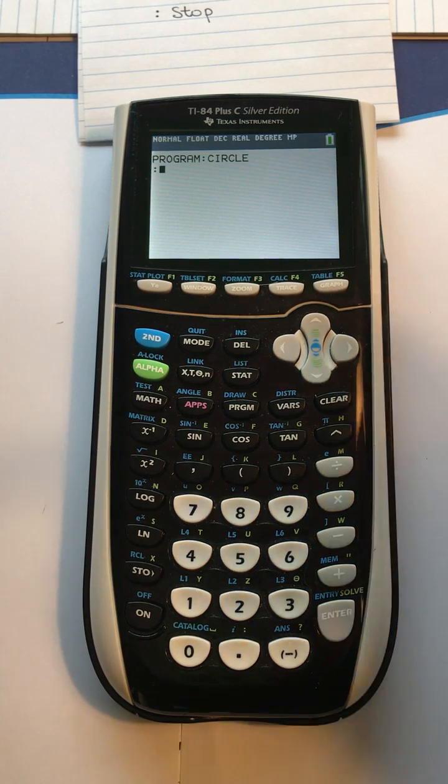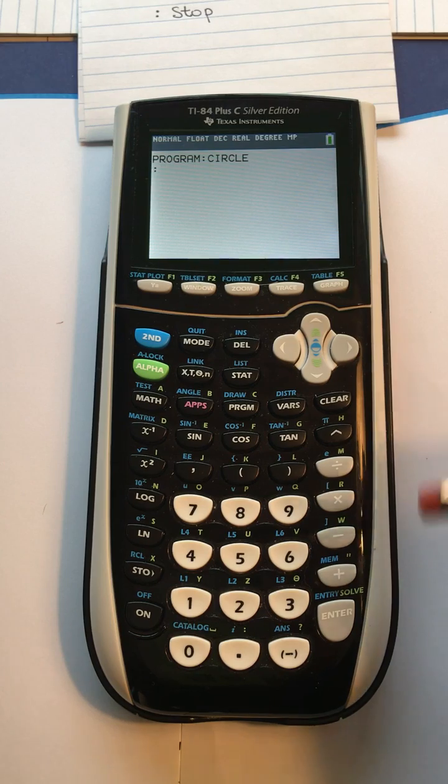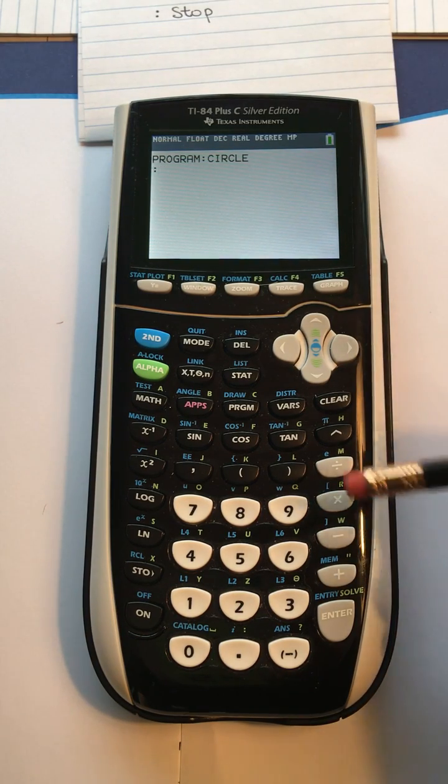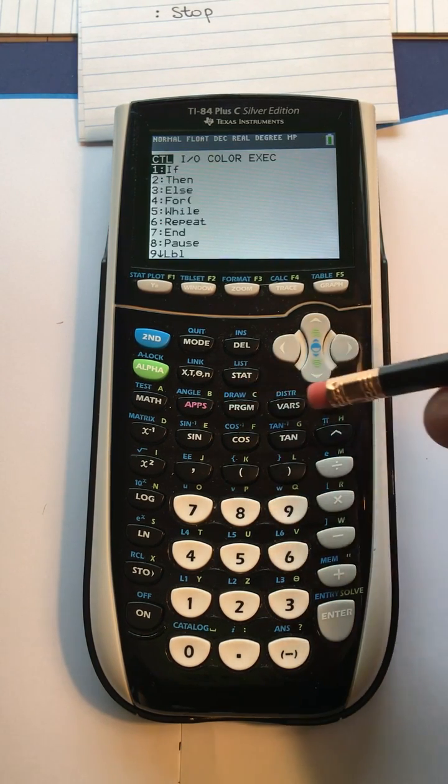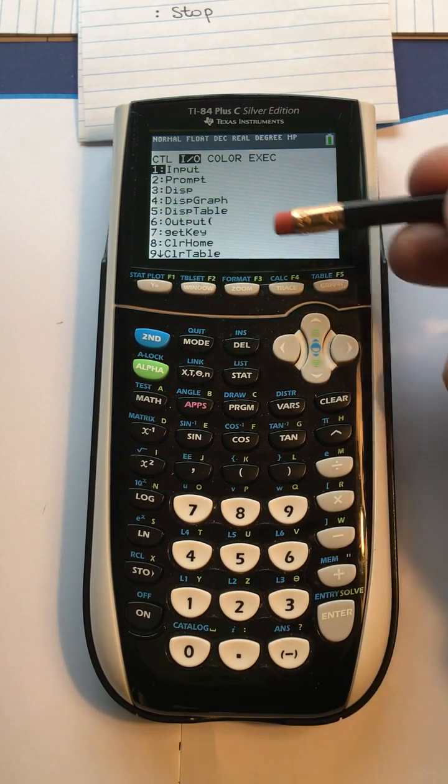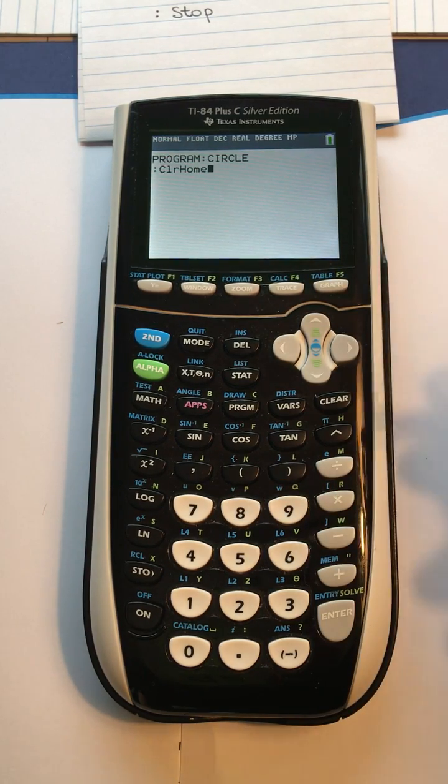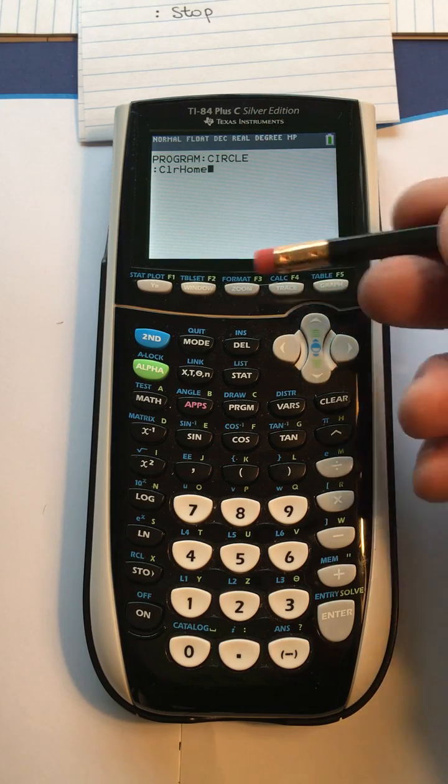That puts us in the program entry mode or edit mode, one of the two. To get the first command, ClrHome, we're going to say program and that tells the calculator we're going to go get the commands. We go to the input output and ClrHome is number eight, so you can press eight or you can press enter, and ClrHome to get to the next line.